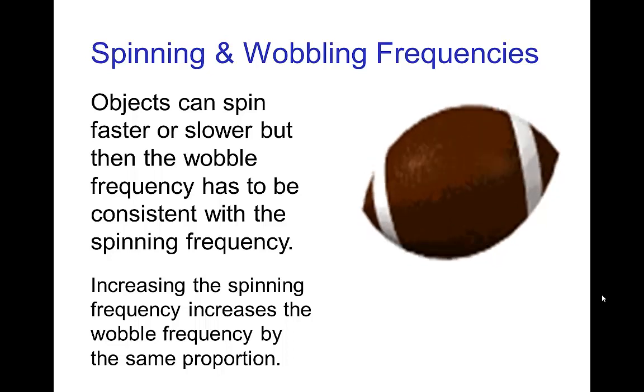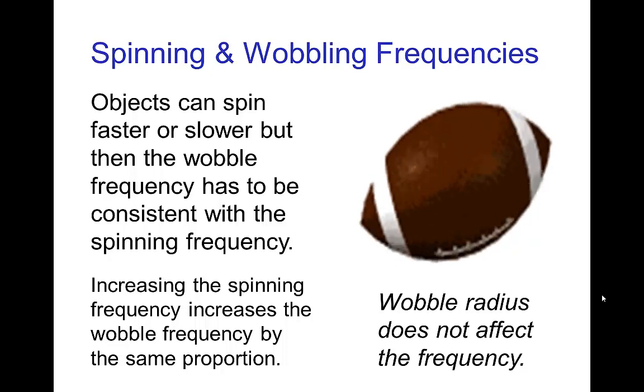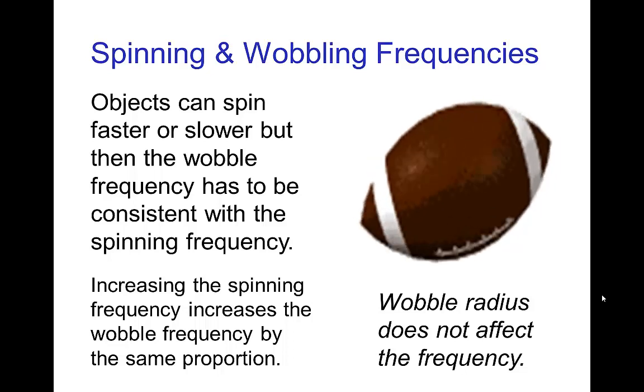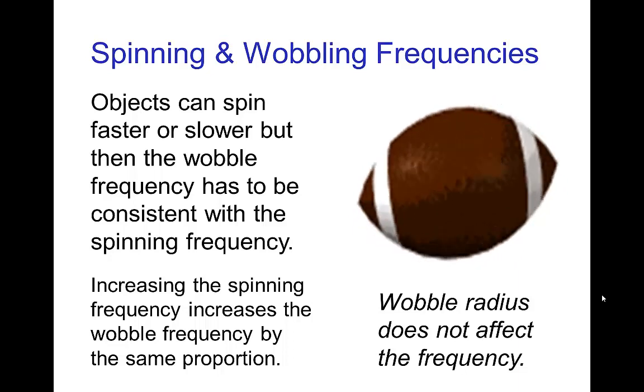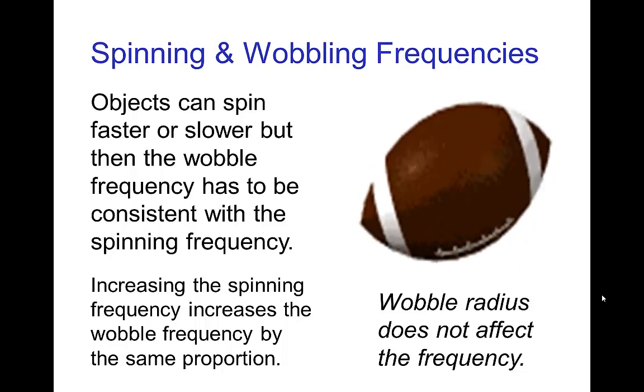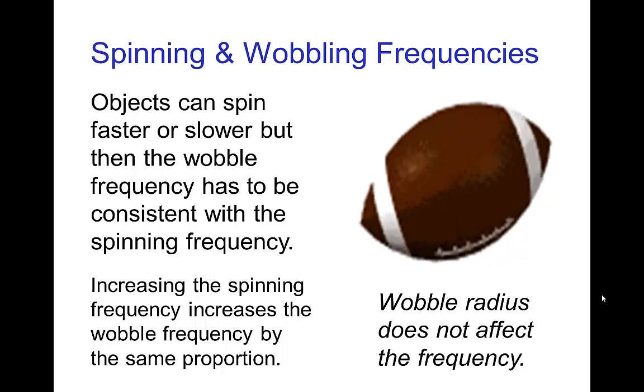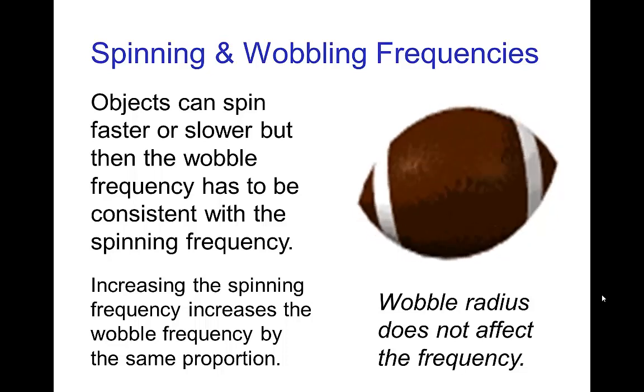It's different for a football than it is for a plate. And the wobble radius does not affect the frequency, so if you throw a football with a tight spiral so that the wobble radius is a very small wobble, so it's almost a perfect spin, it will still have a wobbling frequency which depends on how quickly it's spinning.